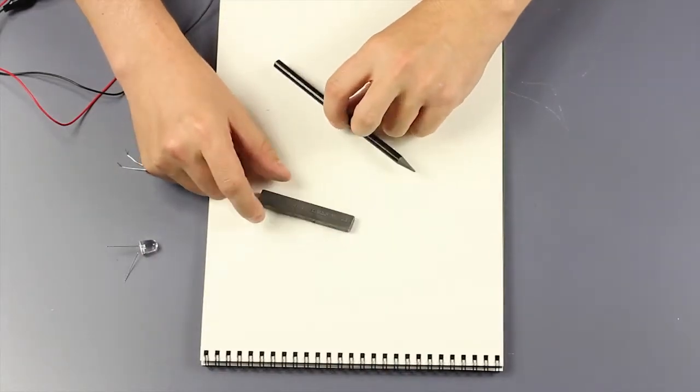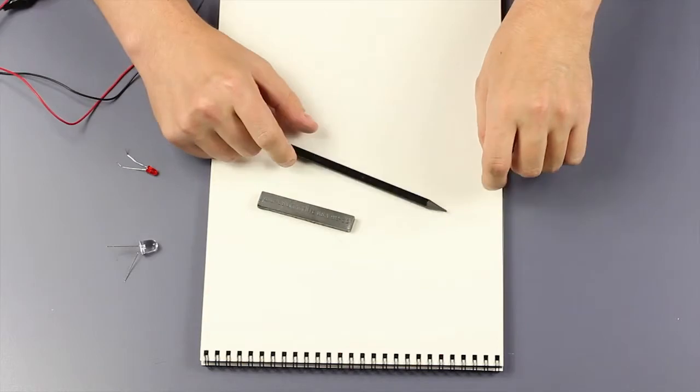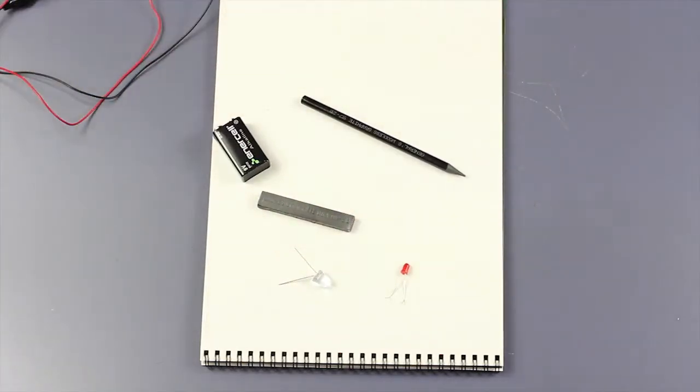By using basic drawing materials such as a graphite block or a pencil, we're going to be able to draw a circuit out on a piece of paper, hook a battery up to it, and actually power an LED light.